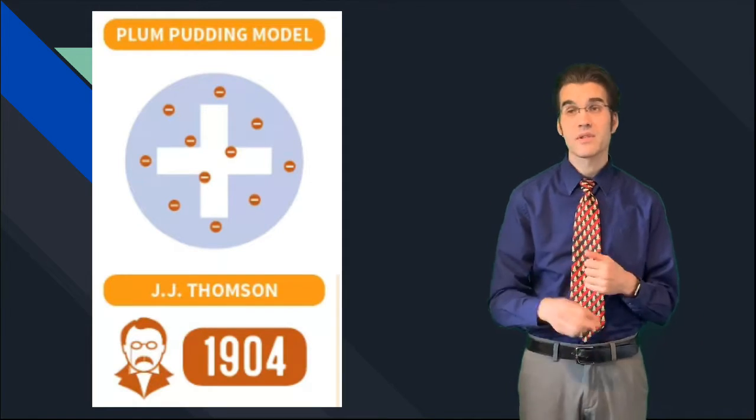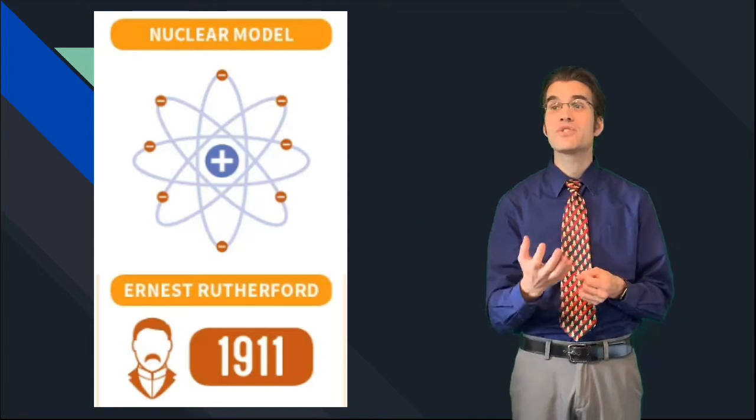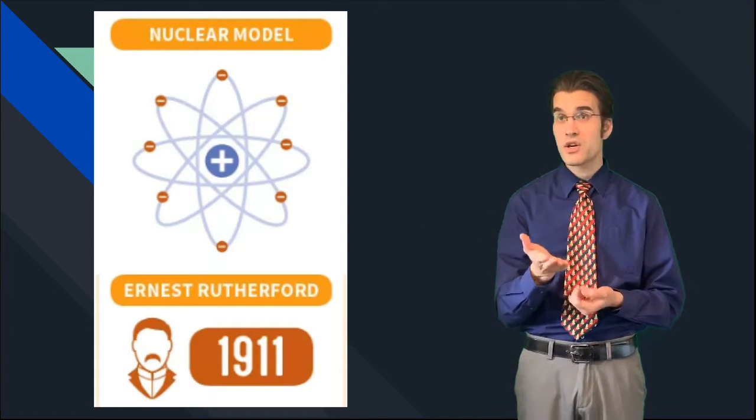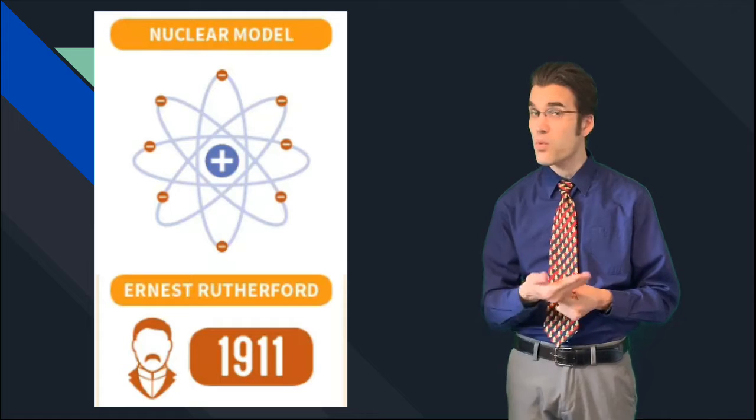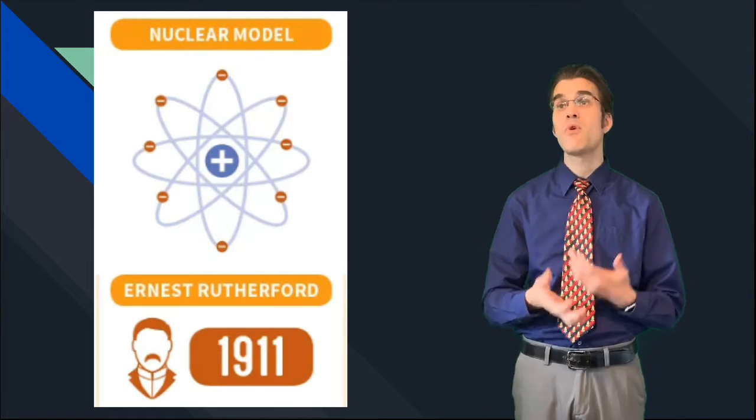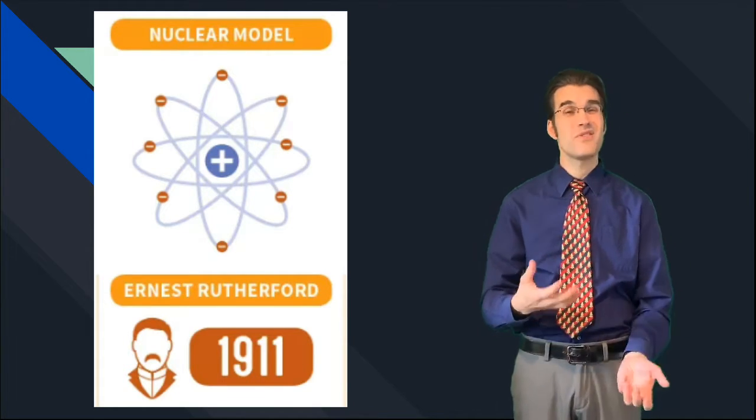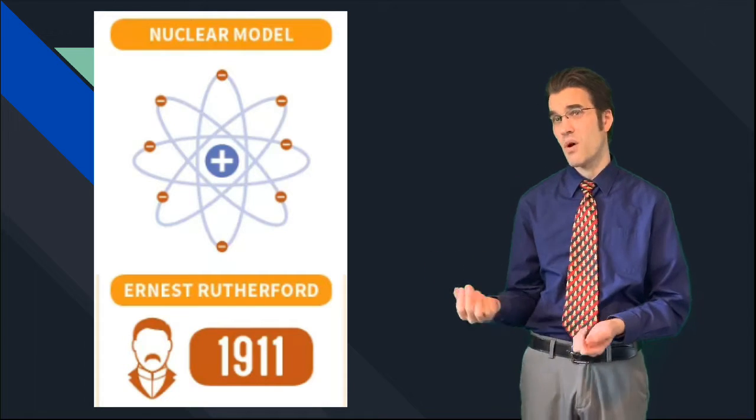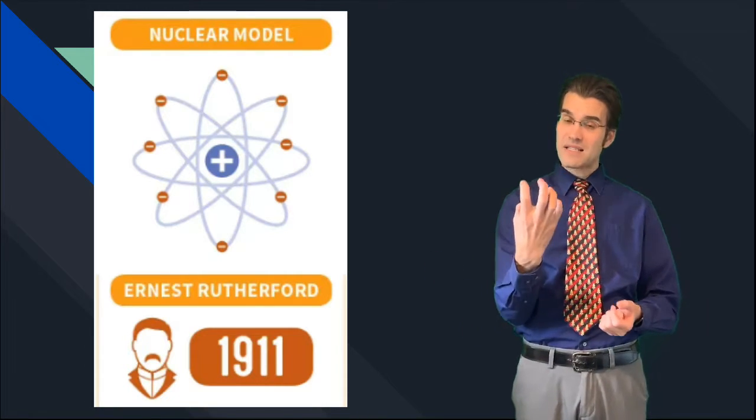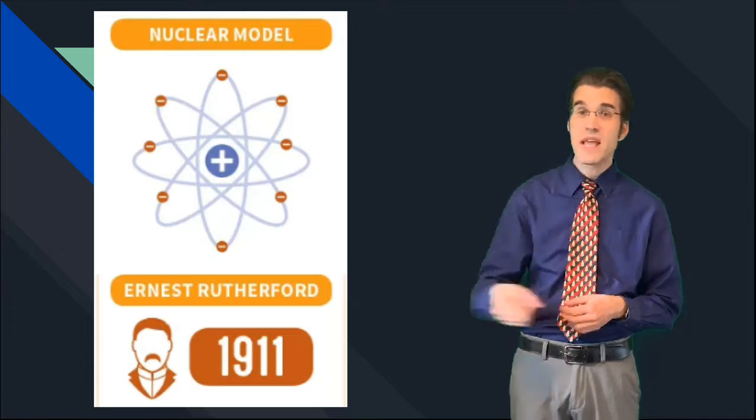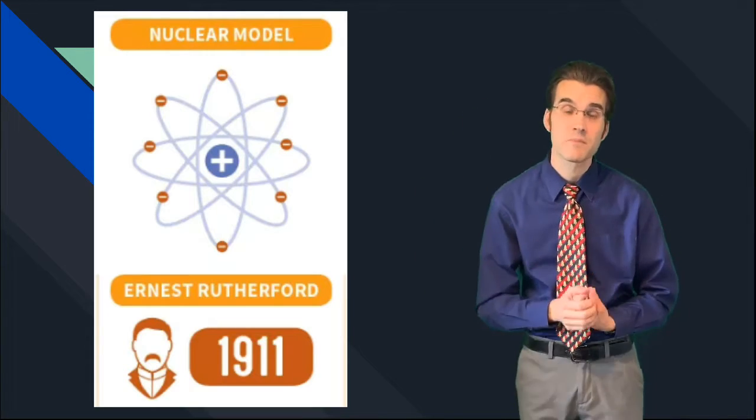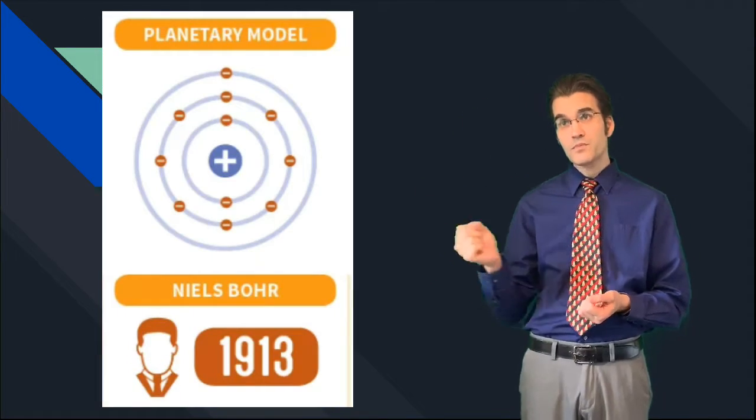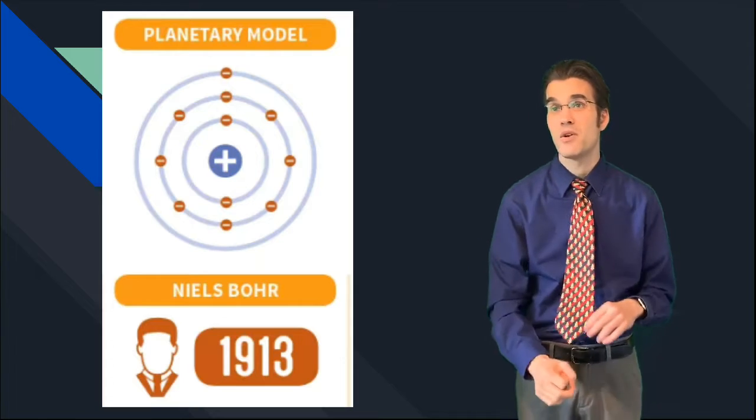So we get to Ernest Rutherford's model. Ernest Rutherford is actually one of the guys that worked with J.J. Thomson. He came up with what we call the nuclear model, and this is a model that looks very similar to what we see today. You have the positive in the middle and you have the negatives going around the outside.